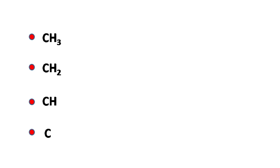Now to make things easy, CH3, CH2, CH and carbon atoms are shown as a red dot. The hydrogen are shown around carbon atom only when they are involved in a reaction.